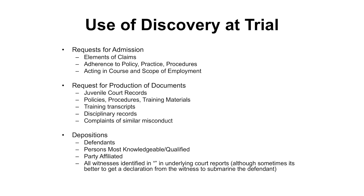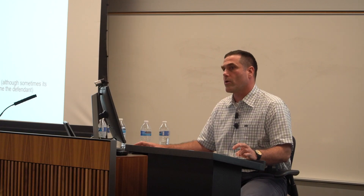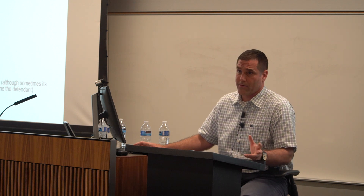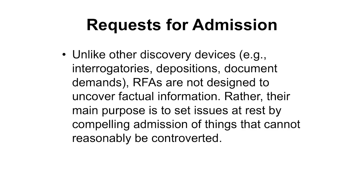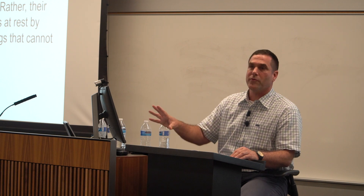Obviously you're going to depose the defendants. Where there's an entity involved, you want to depose the person most knowledgeable — in federal court that's a 30(b)(6) deposition. You'll want to depose party-affiliated witnesses, other employees, management, and all witnesses identified in the underlying juvenile dependency reports. Everybody that gets quoted gets deposed — you're remiss if you don't do it. You're likely to turn up false quotes. Request for admissions are not designed to uncover factual information; their main purpose — their only purpose in my view — is to set issues at rest by compelling admissions of things that cannot reasonably be controverted. They're binding, and you get them in front of the jury.